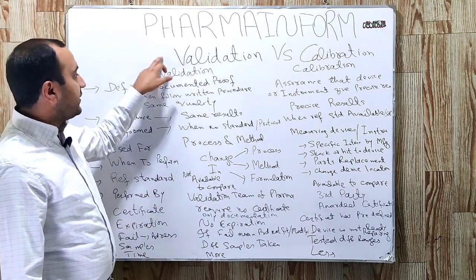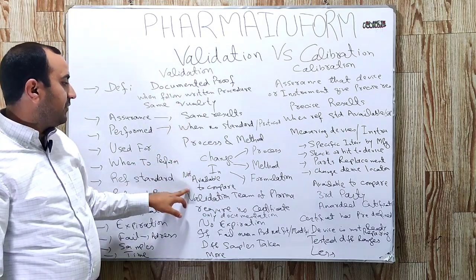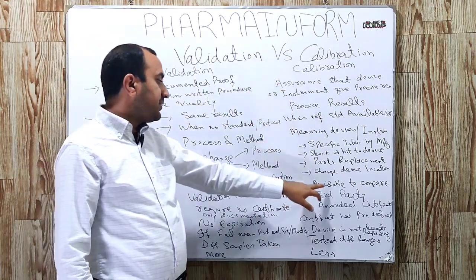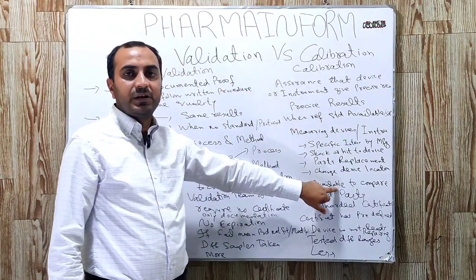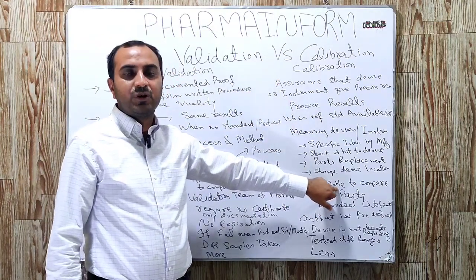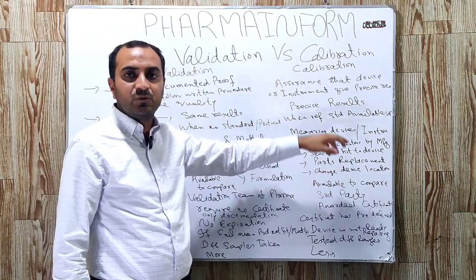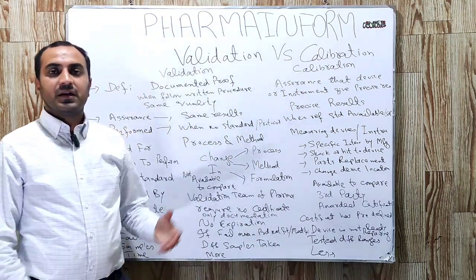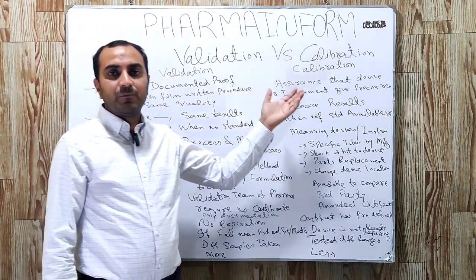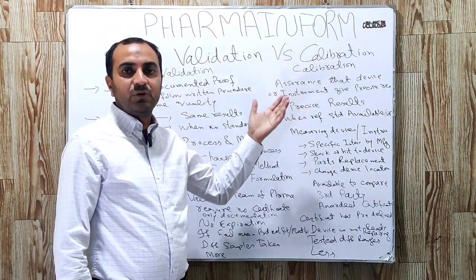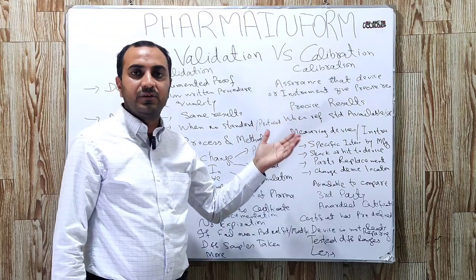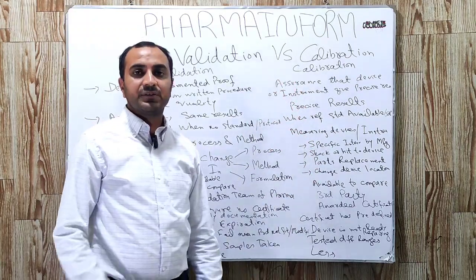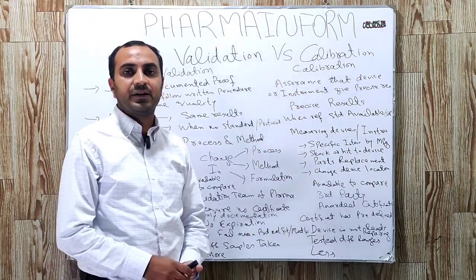Regarding reference standards: in validation, no reference standards are available. In calibration, reference standards are available and we compare the values against those reference standards. An example is calibration of a weighing balance, where we have standard weights and calibrate the balance against them.